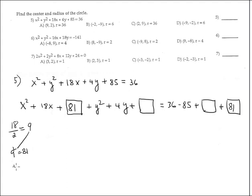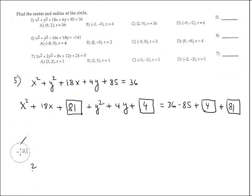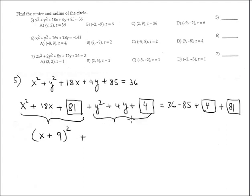Likewise for y: plus y² plus 4y plus another number. 4 divided by 2 is 2, and 2 squared is 4. So the number is 4 — place 4 here and 4 on the right-hand side as well, to keep the equilibrium of the equation. On the left side the trinomial factors as (x + 9)², since the square root of 81 is 9. And likewise (y + 2)². On the right-hand side: 81 plus 4 is 85, and 85 cancels with the negative 85, leaving 36.